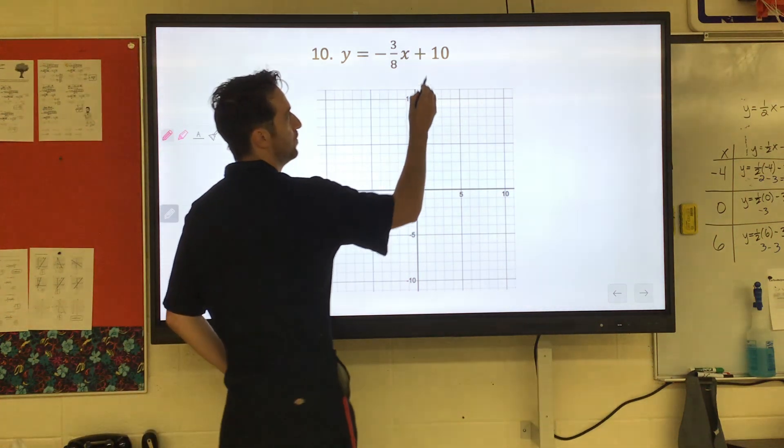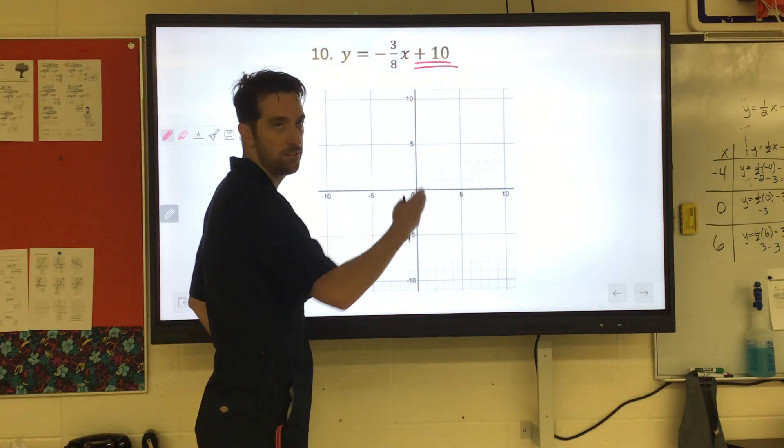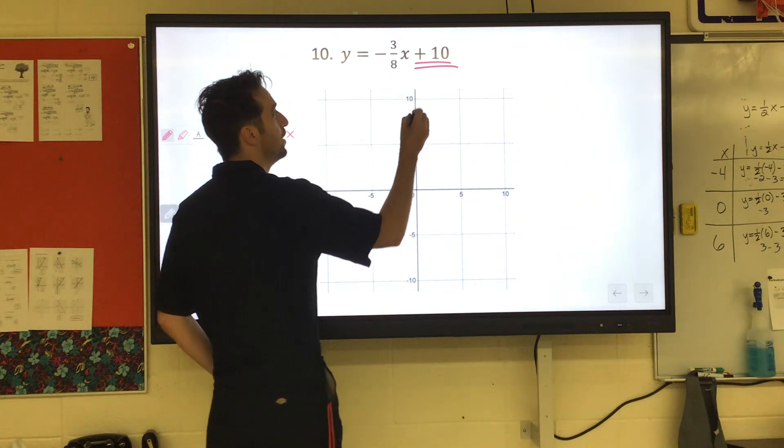We start with the y-intercept, the number without the x, and it's positive 10. The y-axis is up and down. If it's positive, you would go up 10.